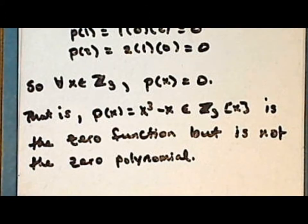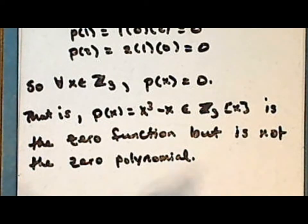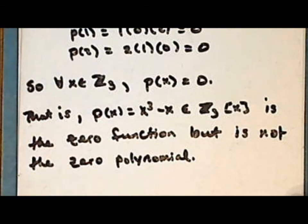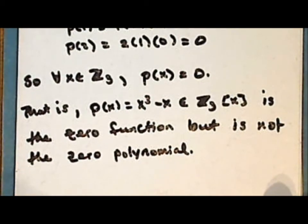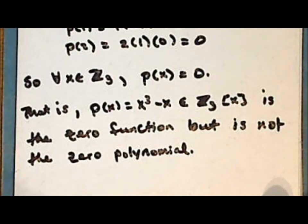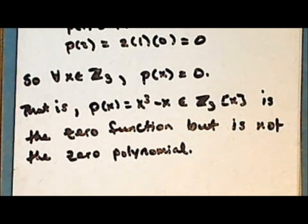For n-dimensional affine spaces over infinite fields, we'll find that the zero function and the zero polynomial coincide. However, we still make the distinction between the zero function and the zero polynomial whether or not the underlying field is based on an infinite set or a finite set.